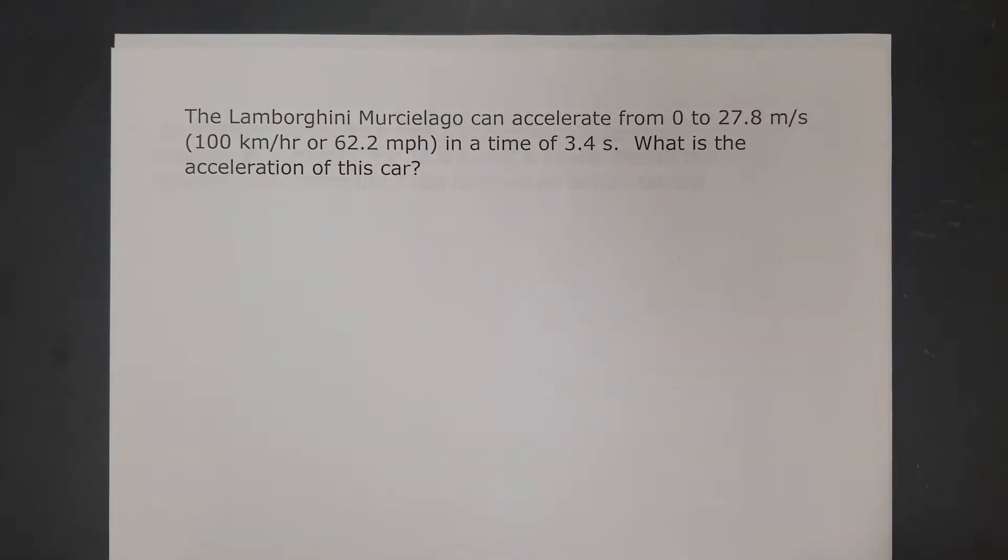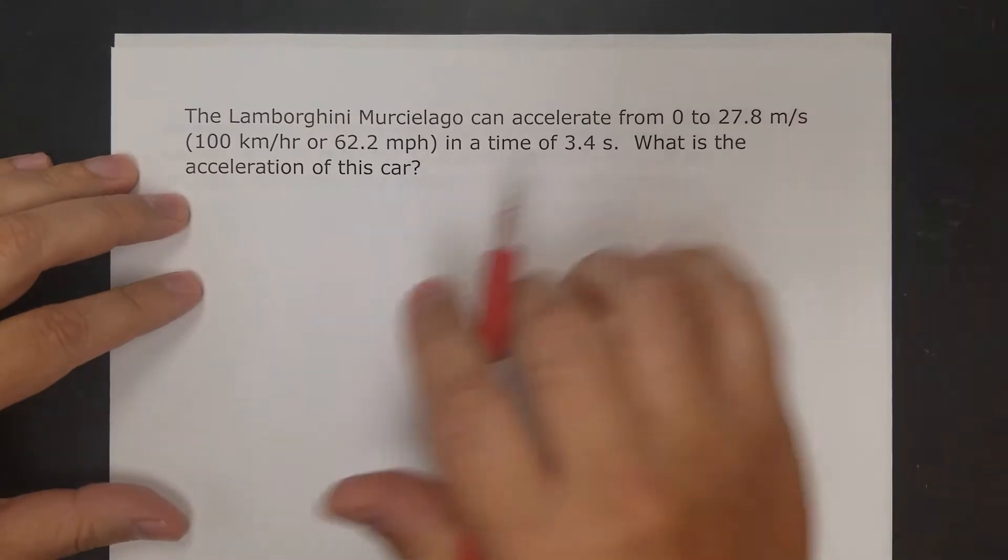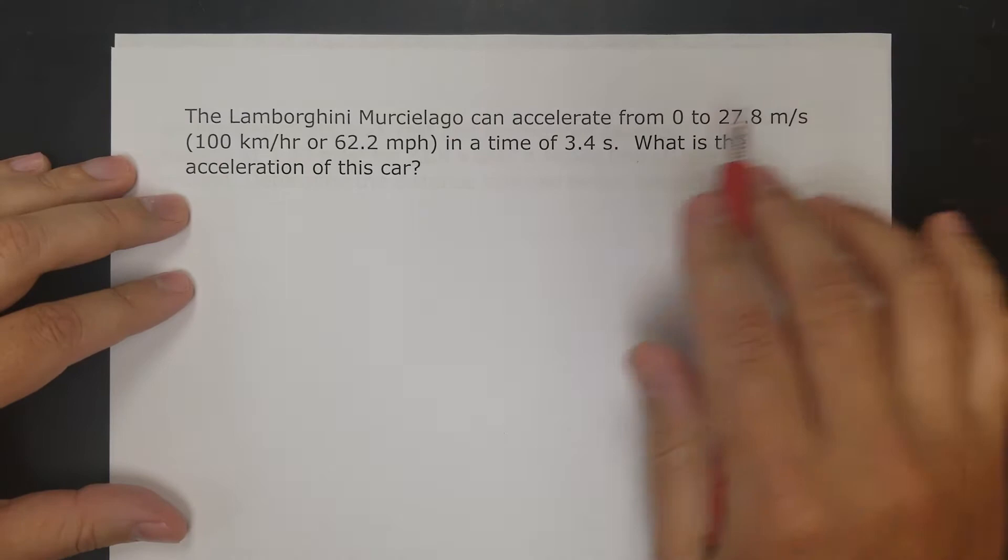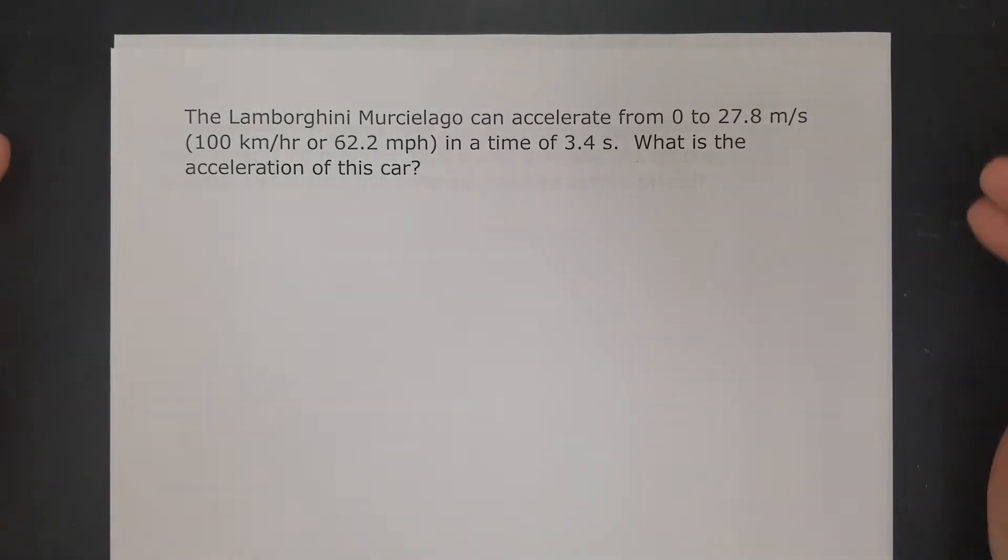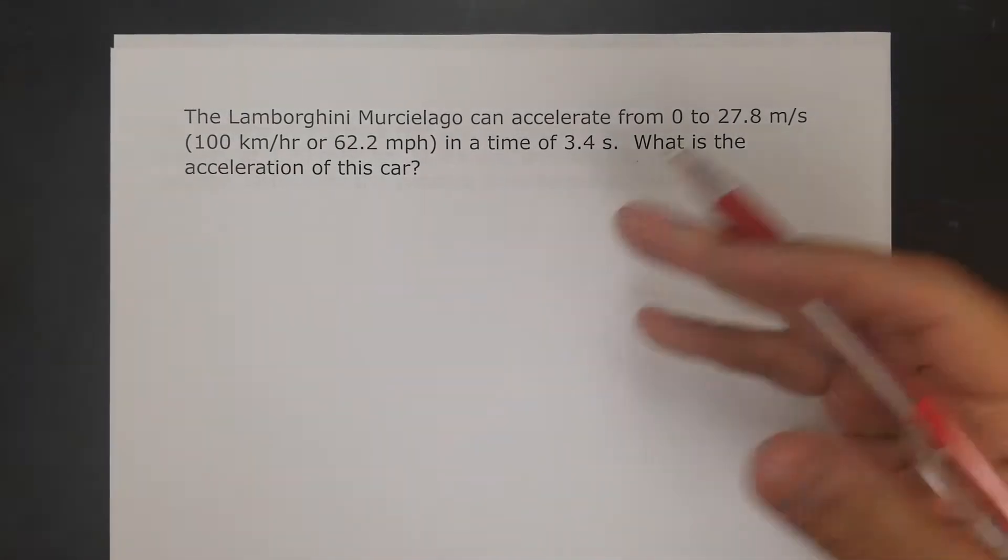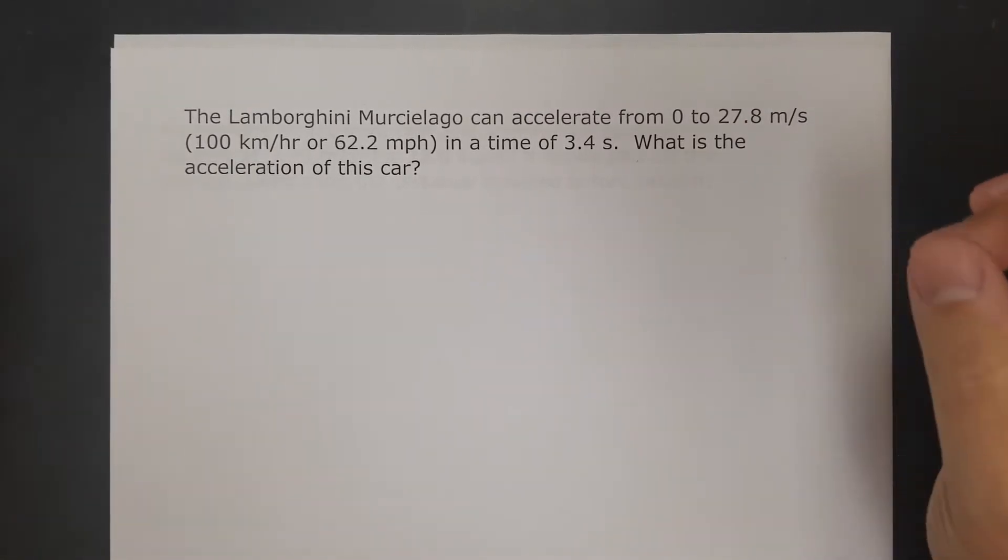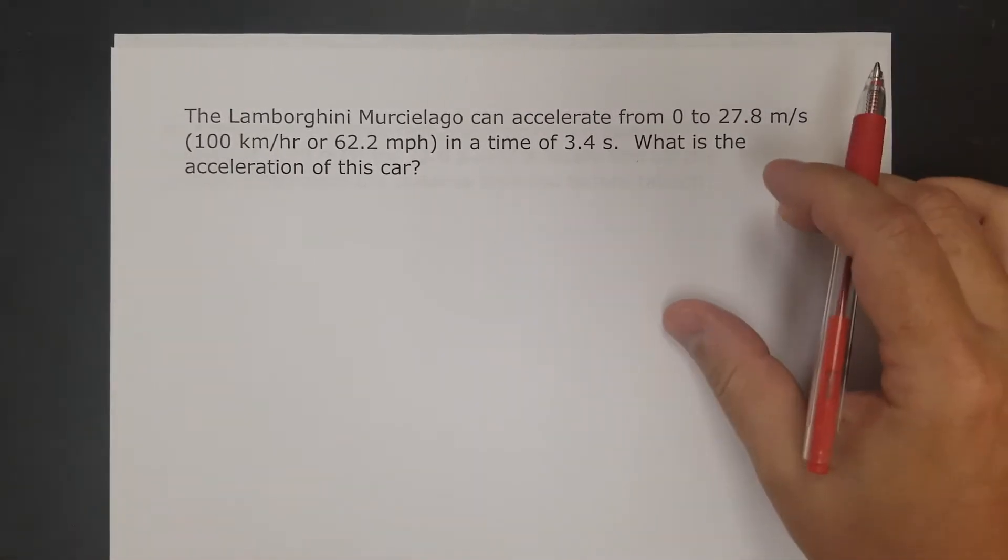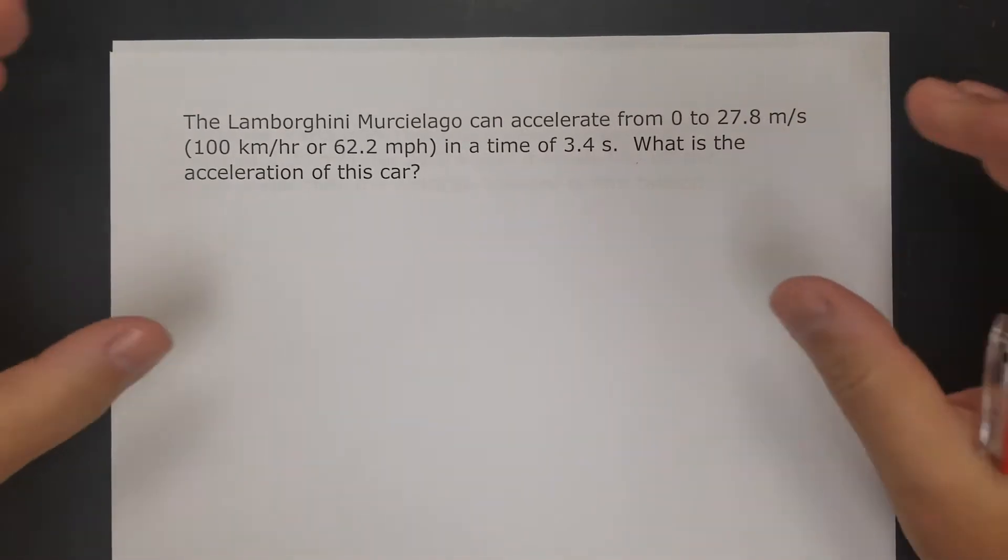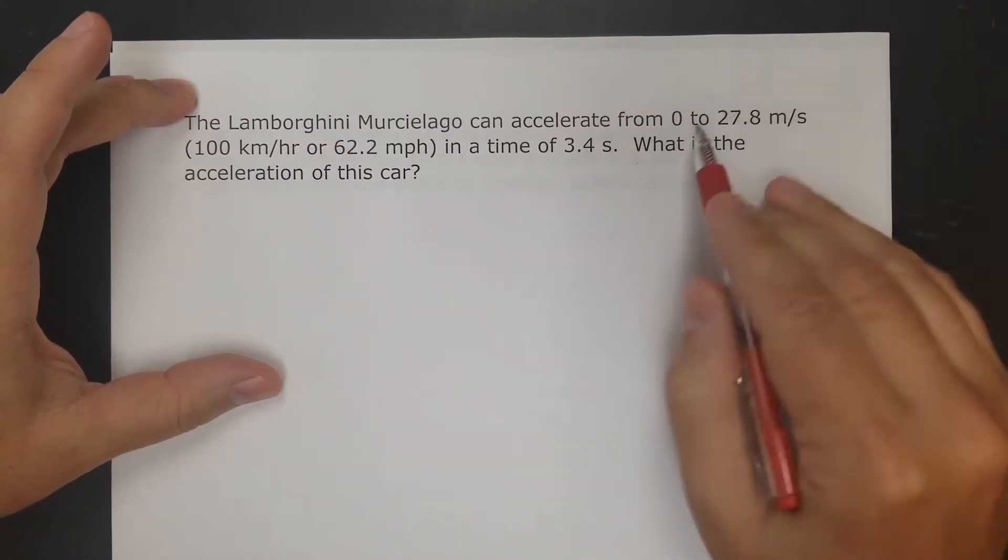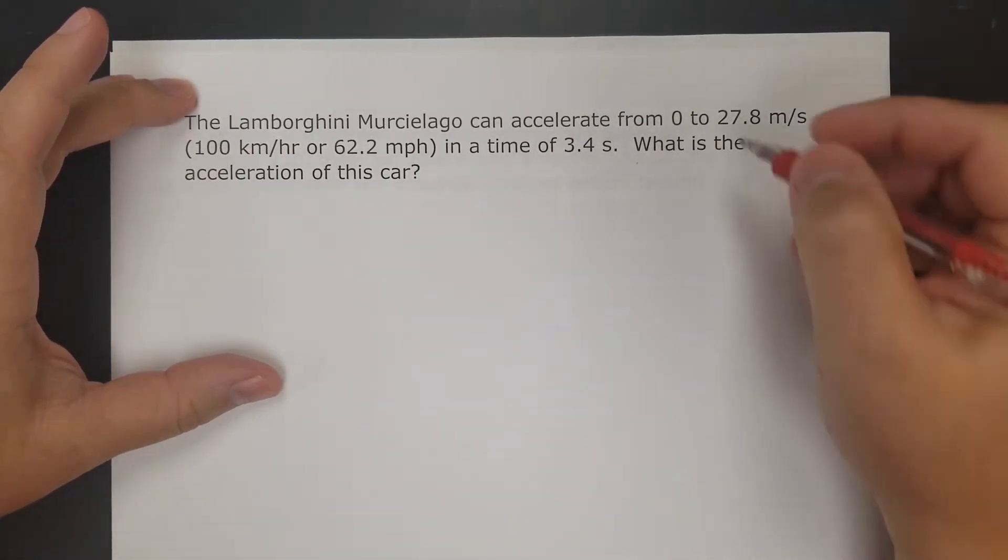Here's the first problem: The Lamborghini Murciélago can accelerate from 0 to 27.8 meters per second in 3.4 seconds. What's the acceleration? Before you start just throwing equations onto the paper, you need to figure out what equation you're going to use. When you start solving these, pick out what numbers match up with variables. What is the 0, what's the 27.8, all that.